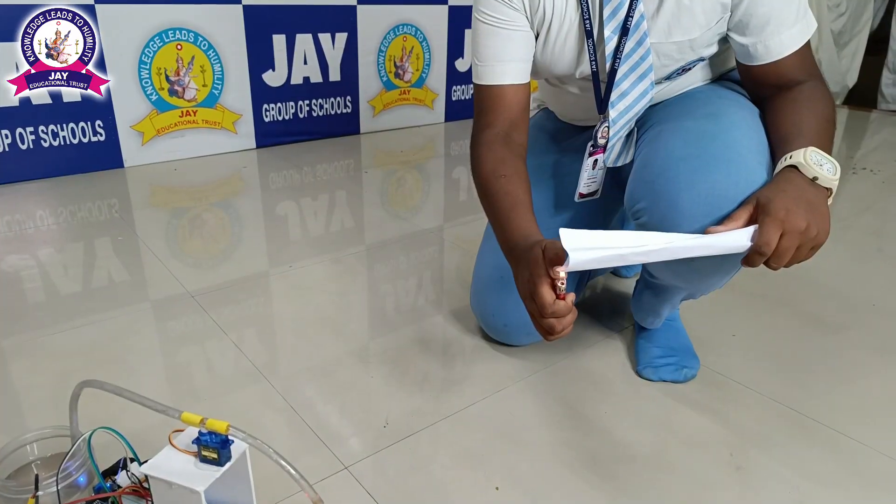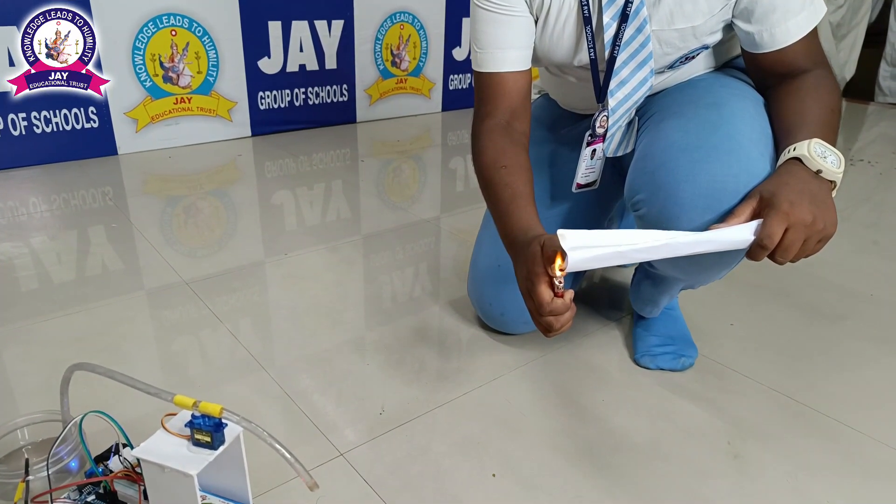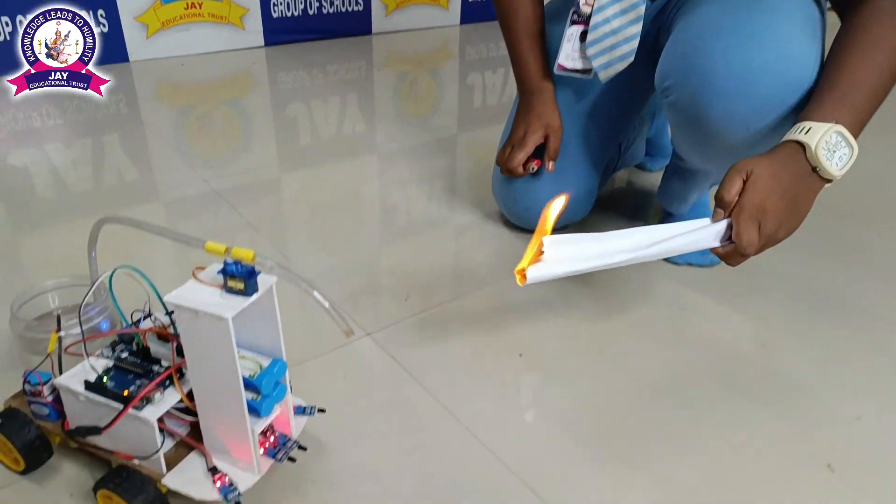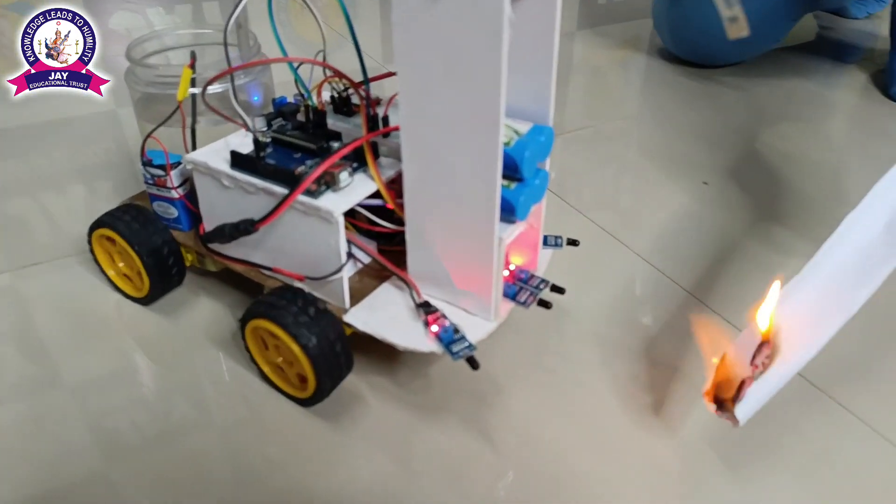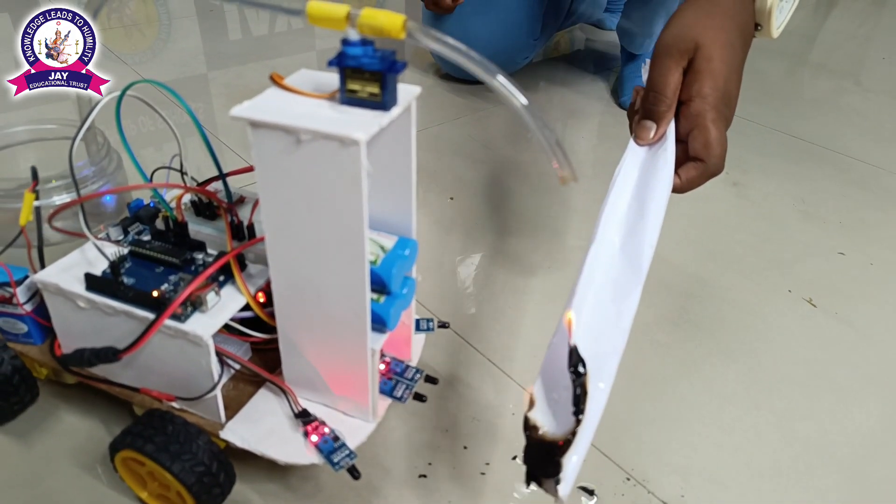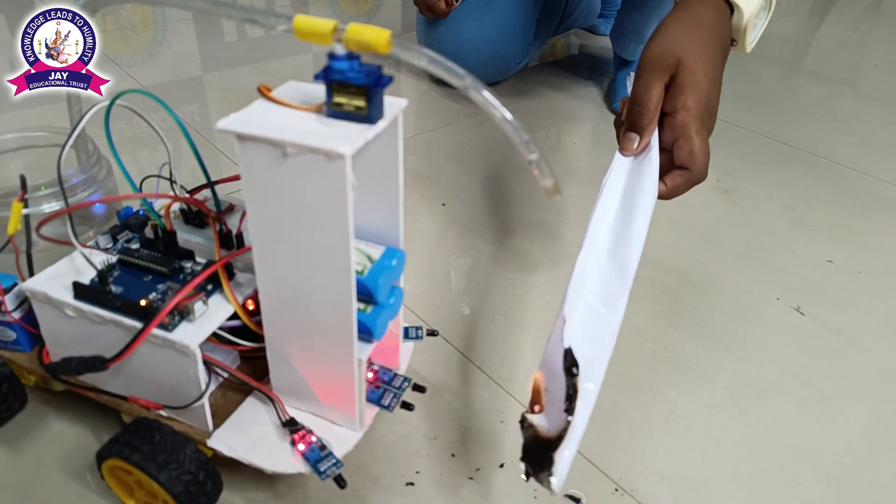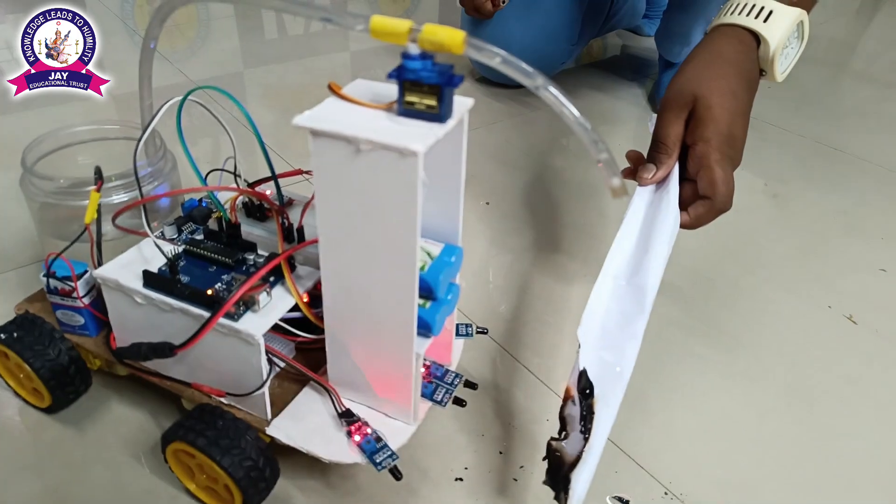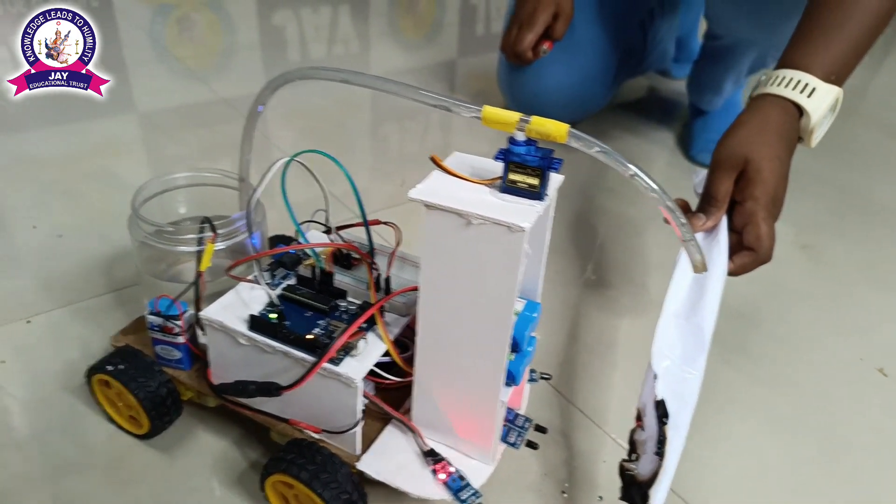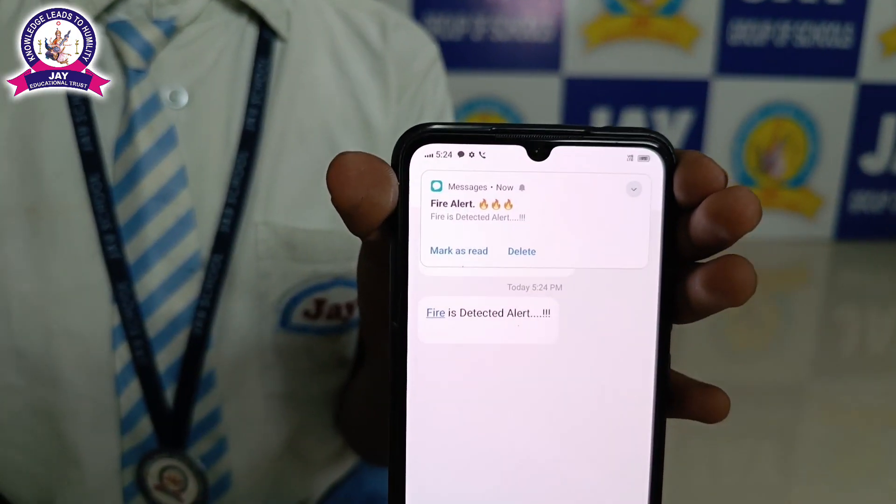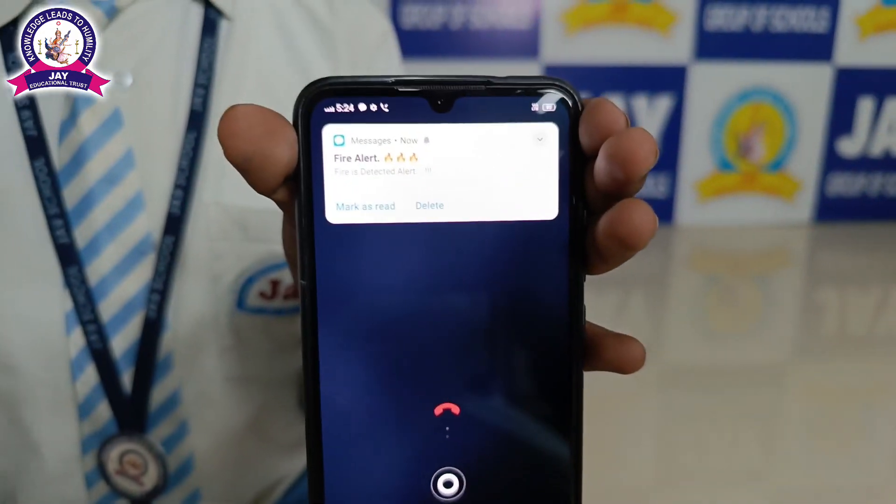Let me show our robot. We are going to fire this paper. When we keep the robot near the paper it detects the fire and it is activated automatically. As soon as detecting the fire the robot spreads water and puts off the fire. And at the same time the robot notifies us through call and message to our mobiles.